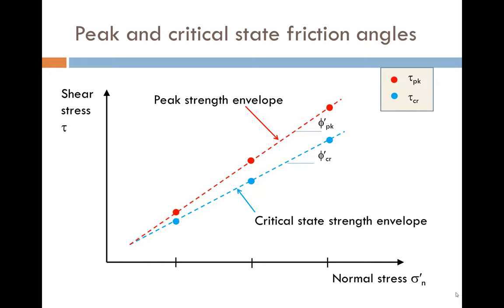It is very important to distinguish between peak friction angles and critical state friction angles. The one we choose in design depends on how much strain we anticipate. For example, we might use a peak friction angle for a retaining wall design, whereas a critical state friction angle might be more suitable for a slope stability problem.